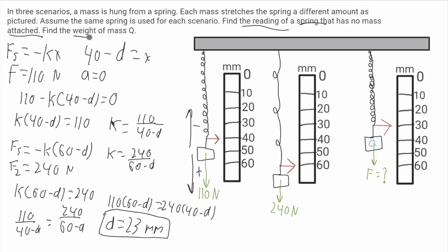Now we also need to find the weight of mass Q. Weight is a measurement of force so we're actually looking for this force here. As with all of these other scenarios, there's going to be the force of the spring that points upwards. That'll be F spring equal to negative k. This time it's reading 30 so it'll be 30 minus d.